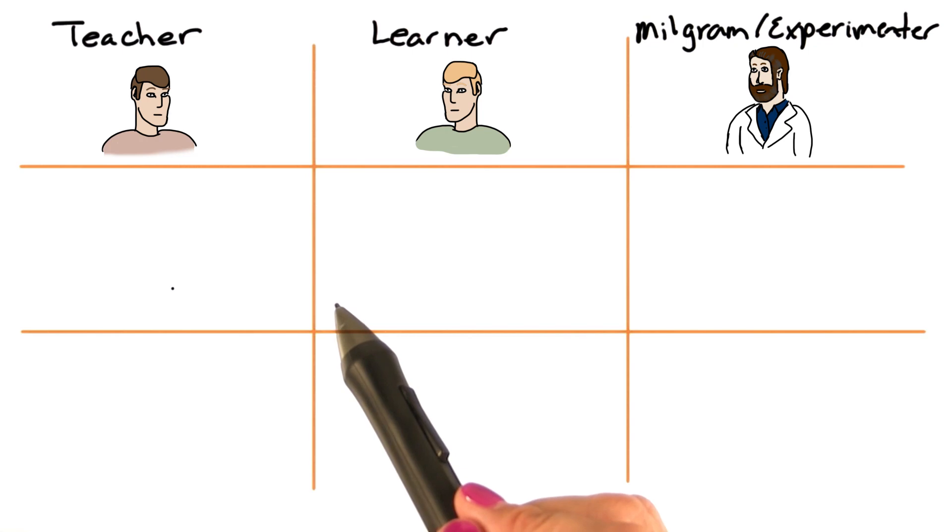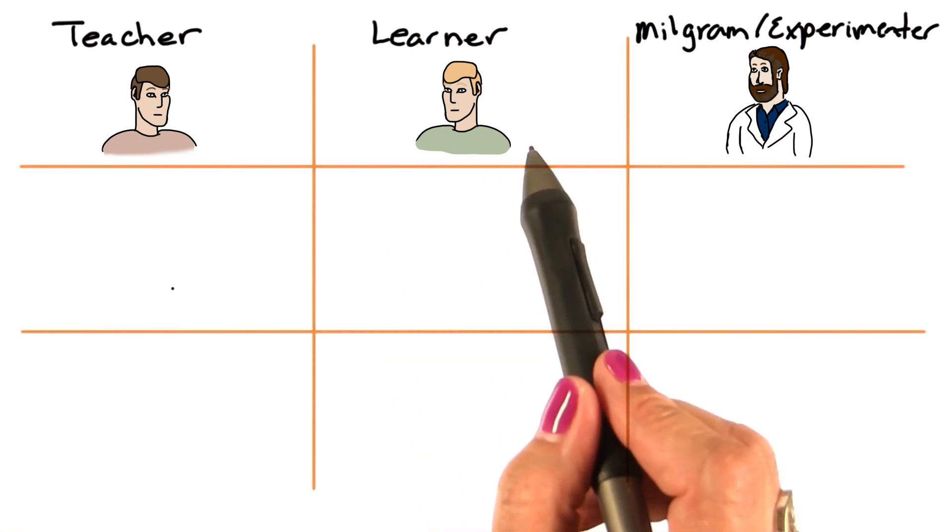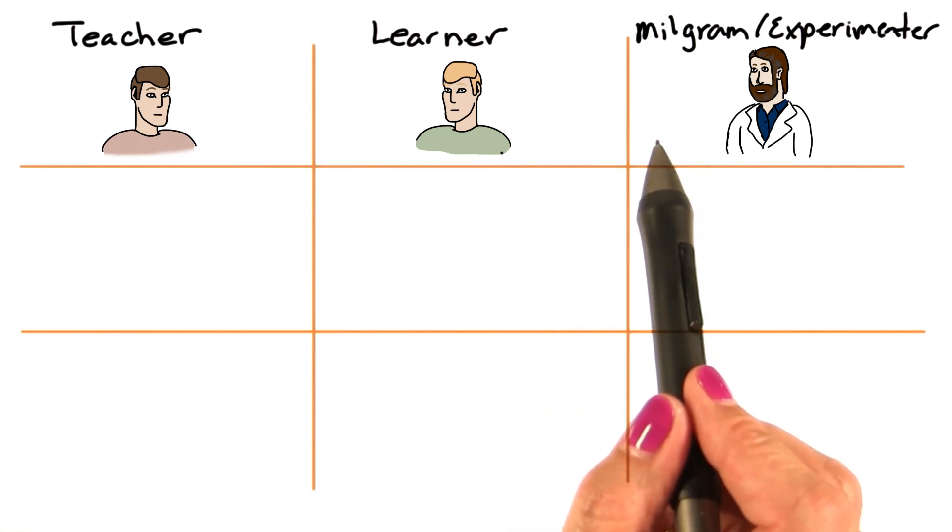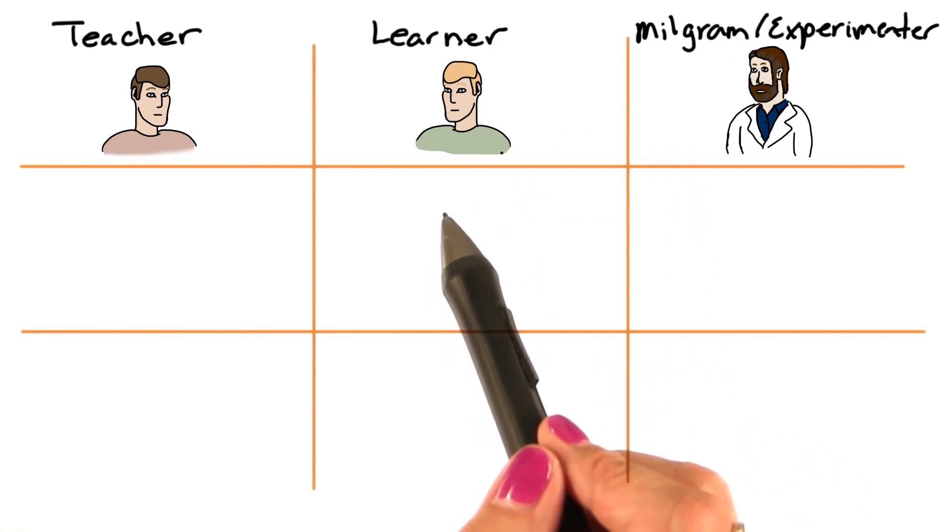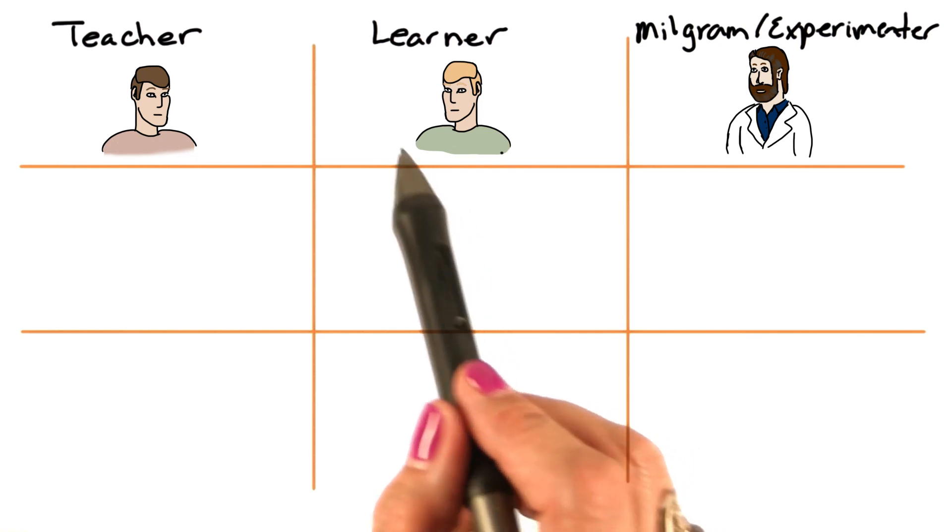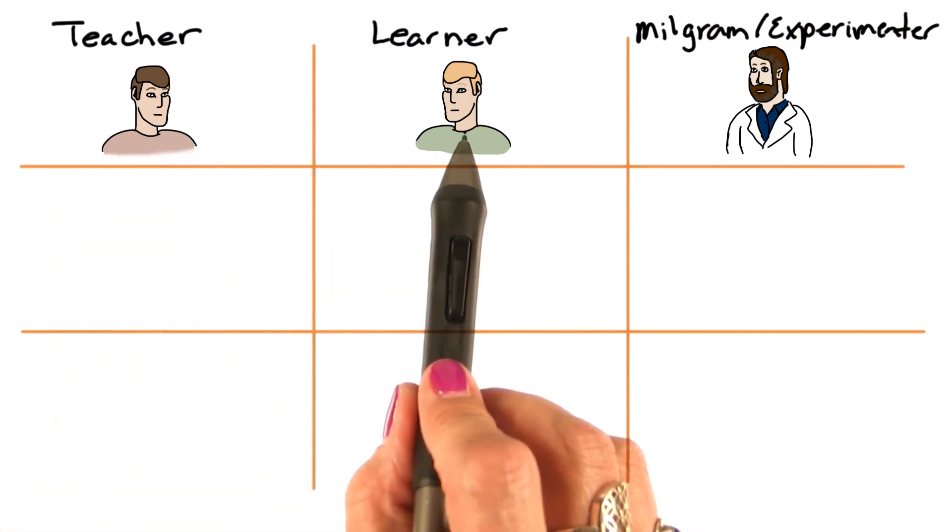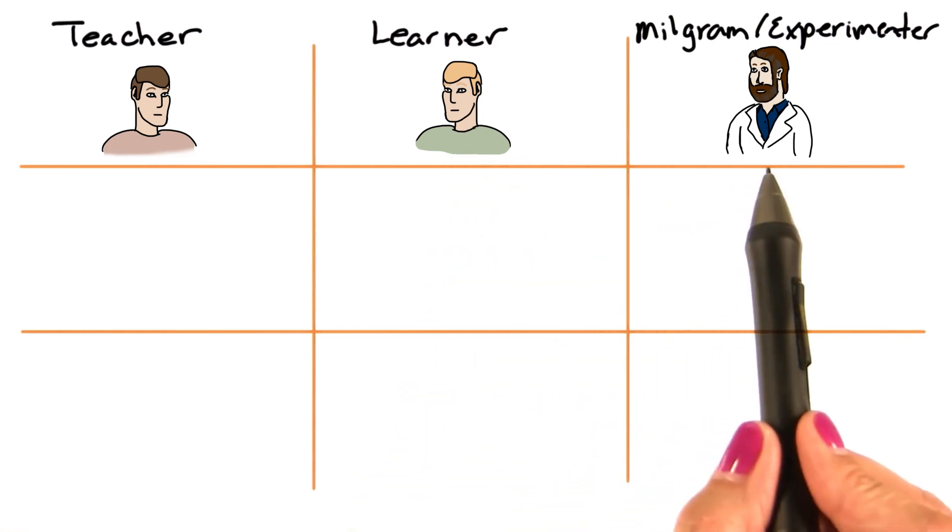Unbeknownst to the participant, the person who was with Milgram was actually a confederate, meaning that person was working for Milgram. Therefore, when they chose slips, Milgram had arranged it that the real participant was always the teacher, and the learner was the confederate.